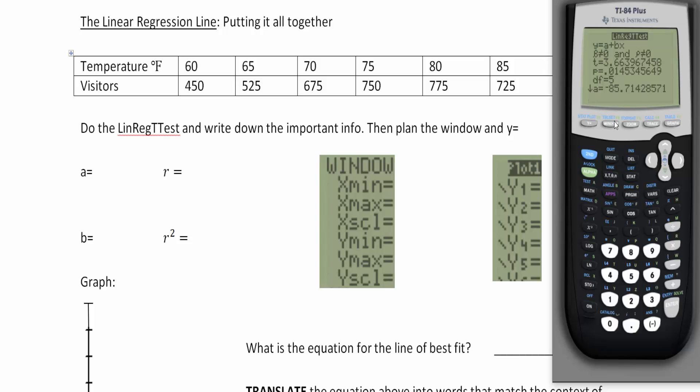The important information we need to get down is the a, the b, the r, and the r squared. Let's scroll all the way down here and grab those values. My a is negative 85.7.